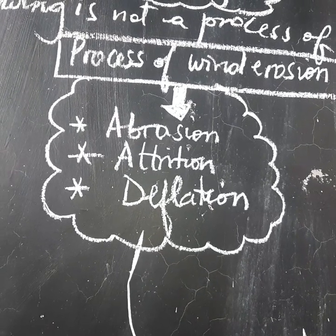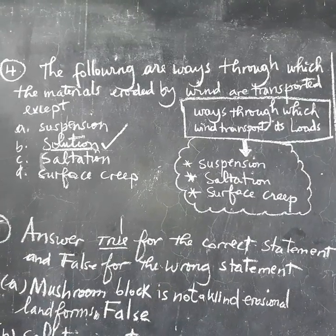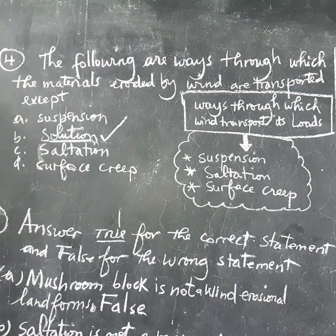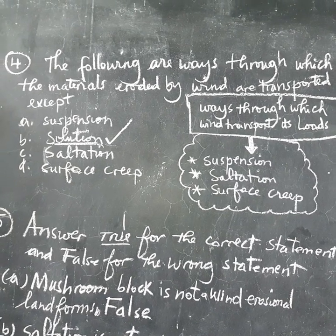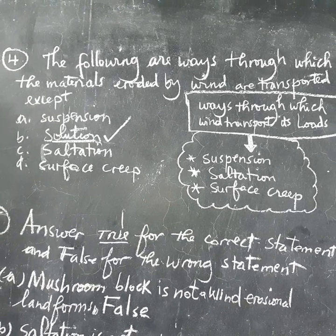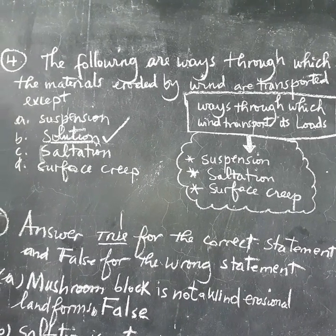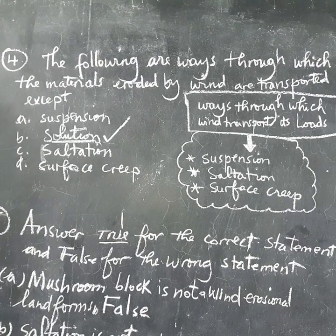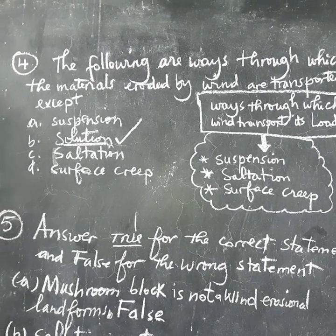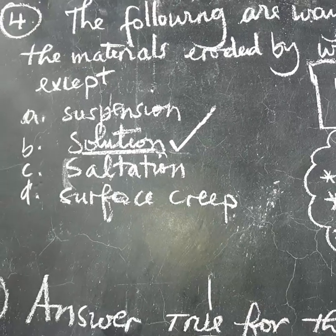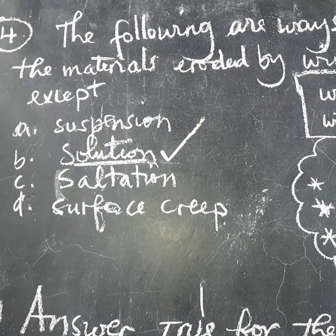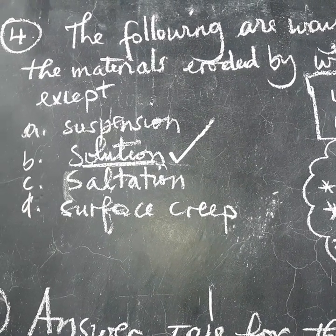Let's go to question number four. The following are ways through which the materials eroded by wind are transported, except. Meaning that we are going to choose which one is not a process of wind transportation. We have: A: Suspension. B: Saltation. C: Saltation. D: Surface creep. The correct answer is B, because saltation is not a process of wind transportation.